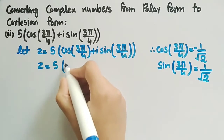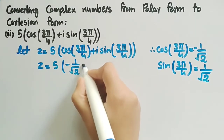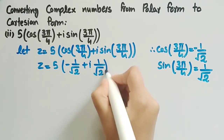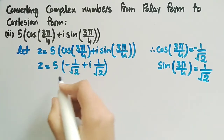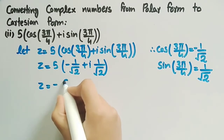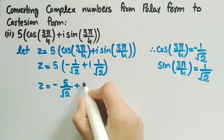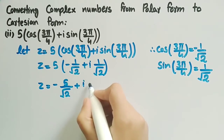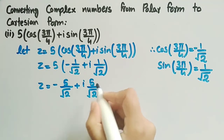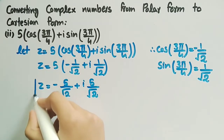Which is equal to -5/√2 + i·5/√2. This is the required cartesian form.